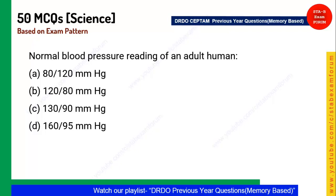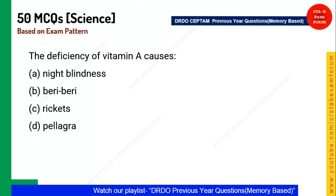Next question: What is the normal blood pressure reading of an adult human? The answer is 120/80 mmHg — millimeters of mercury (Hg stands for mercury). Option B is the correct answer.